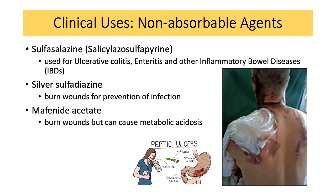For non-absorbable agents: sulfasalazine is used for ulcerative colitis, enteritis, and other inflammatory bowel diseases. Silver sulfadiazine ointment is given for burn wounds for the prevention of infection. Please take note that when we treat burn patients, we don't give antibiotics right away — we give this to prevent infection. Mafenide acetate is also used for burn wounds, but it can cause metabolic acidosis, which we don't want in burn patients.